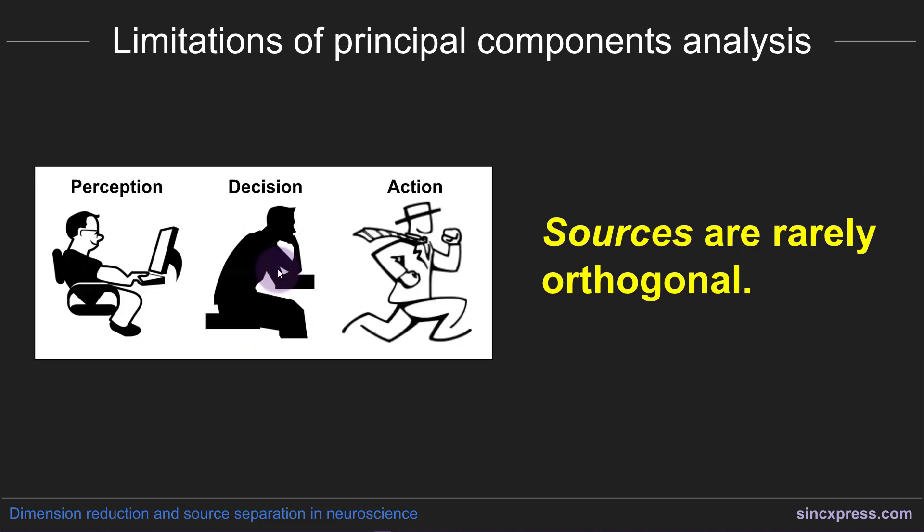The reason why I make this claim is if you think about cognitive processes and neural processes, think about neural computations and neurophysiology—there isn't a whole lot of orthogonality in the brain. In fact, there is a whole lot of correlation and correlational structure in the brain.